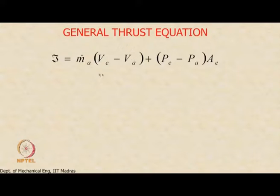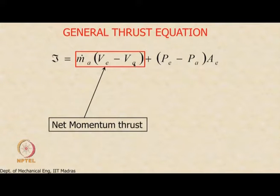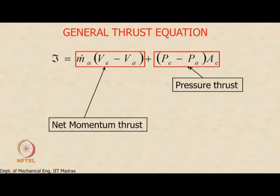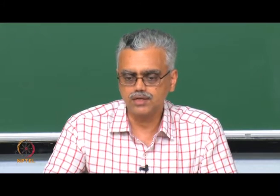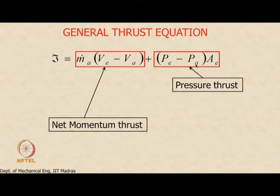The thrust equation has two terms: the first involves changes in velocity — the net momentum thrust — which is the change in momentum of the airflow through the engine. M-dot-A is the mass flow rate of air; multiplied by the change in velocity of the air stream, it gives the net momentum thrust. The second term is the pressure thrust: if exit pressure exceeds ambient pressure, the difference translates into a force on the exit plane.